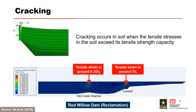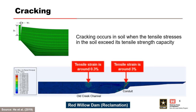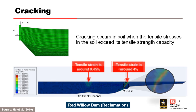The cracking over the old creek section is a result of settlements in the creek section being smaller than in the adjacent embankment. The depth of alluvium beneath the embankment in the creek section was smaller because the rock level was higher here than elsewhere, and the creek was infilled with embankment material. Stepping through the images, you can see how the accumulation of tensile strains increases post-construction settlement as a function of embankment height.